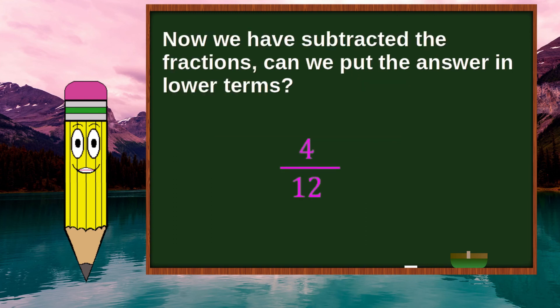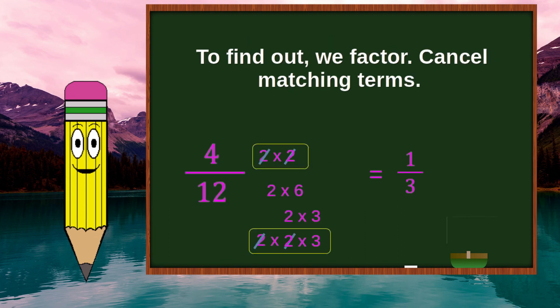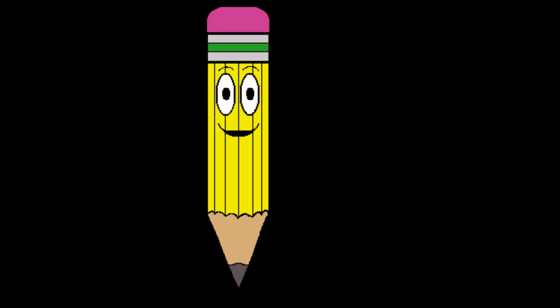Now we have subtracted the fractions. Can we put the answer in lower terms? To find out, we factor. Cancel matching terms. Our final answer is 1 over 3. Well that was fun.